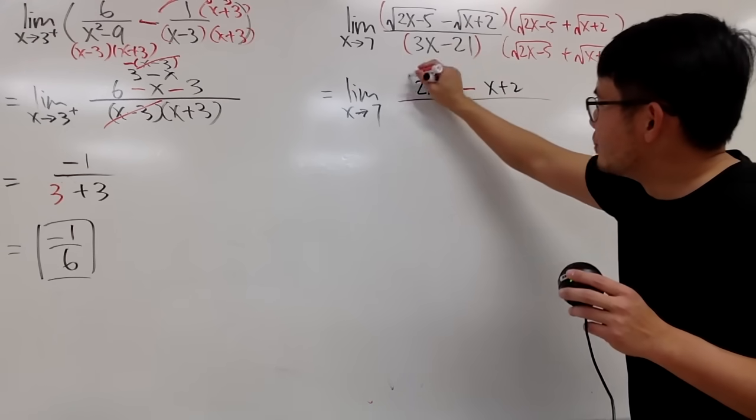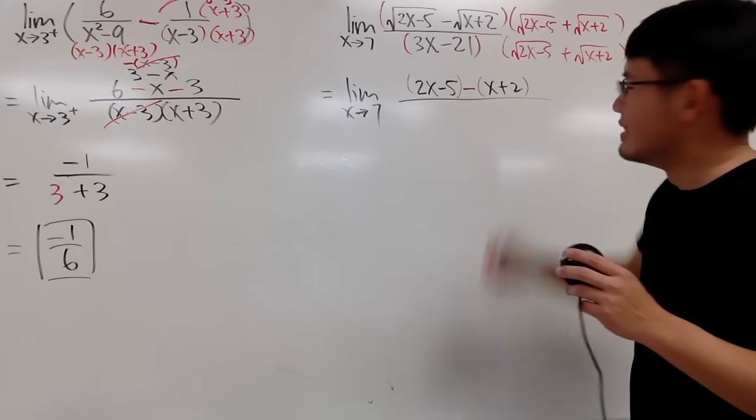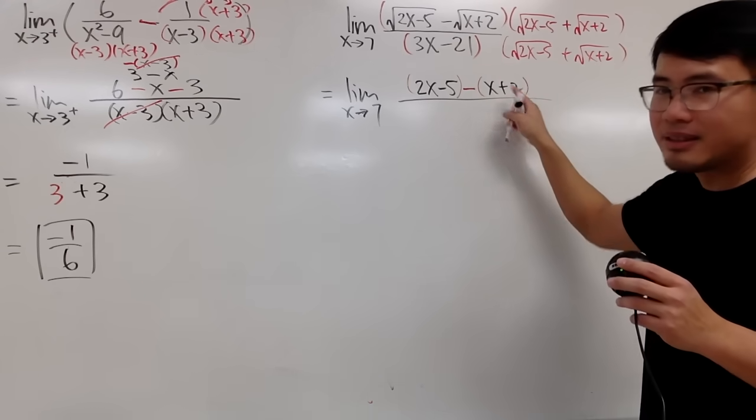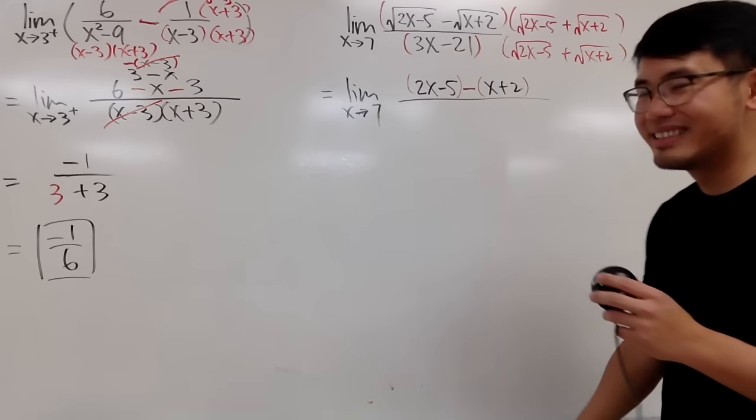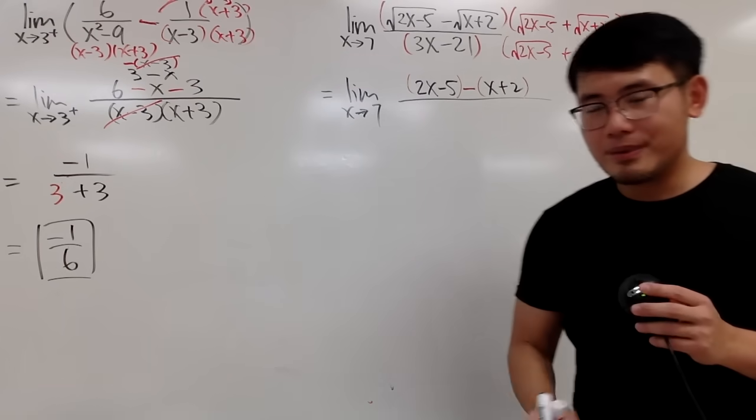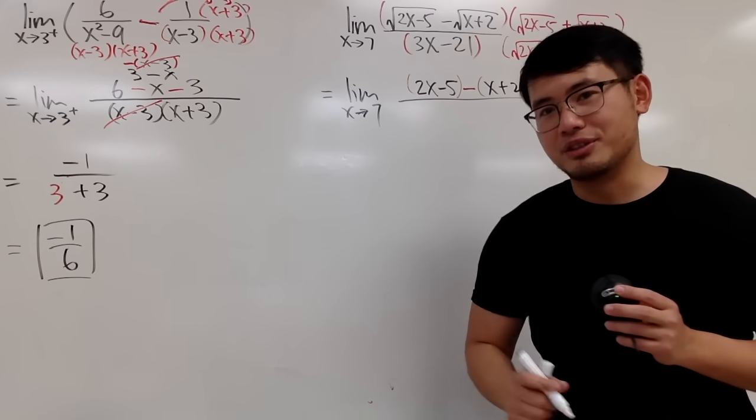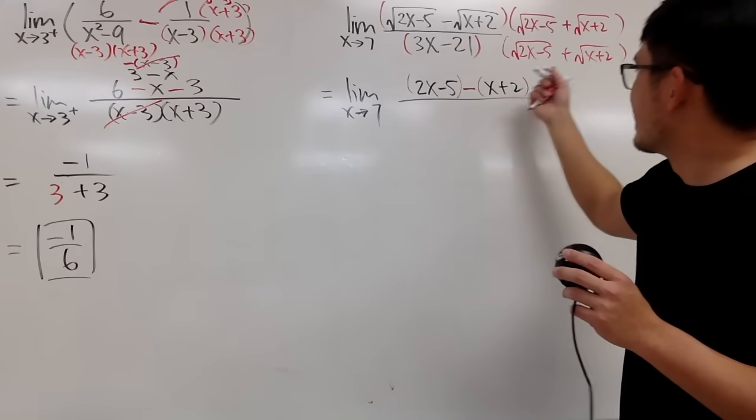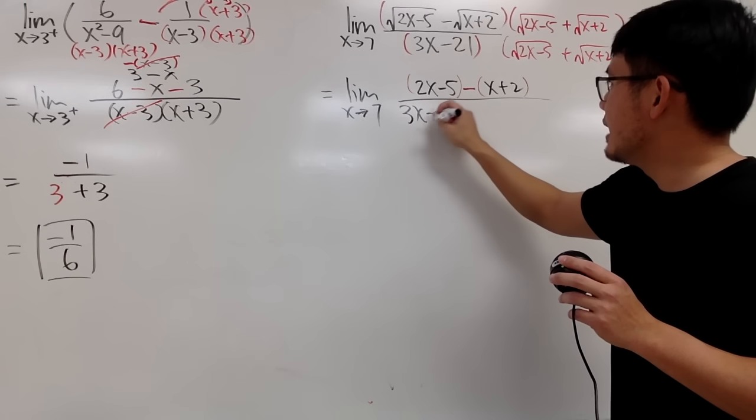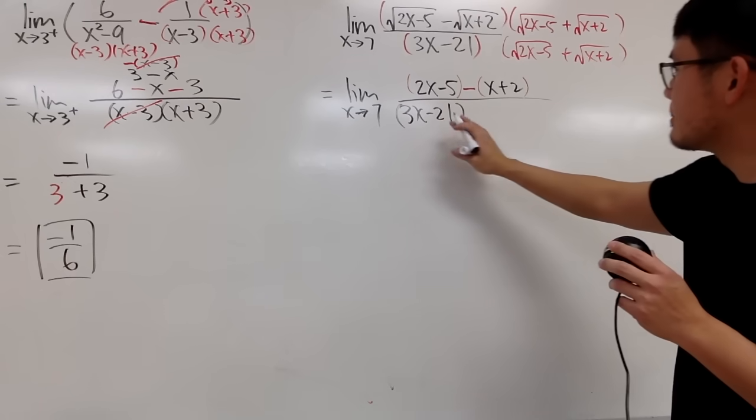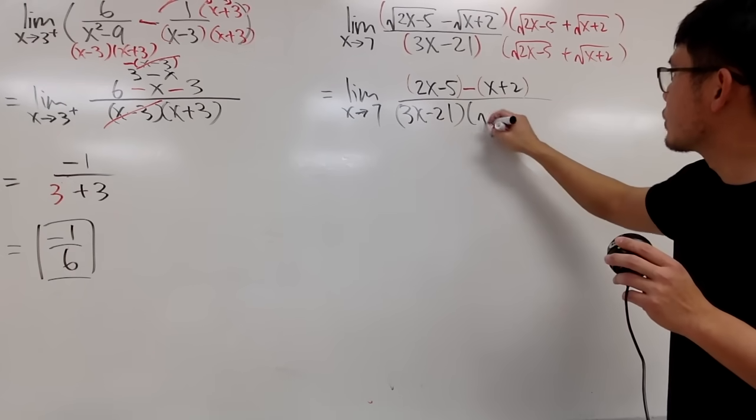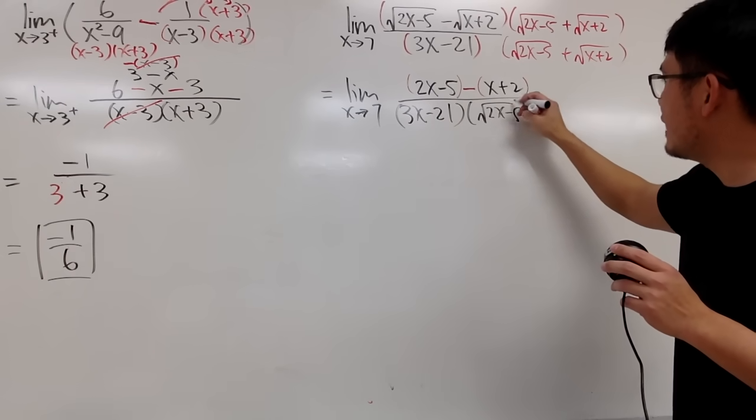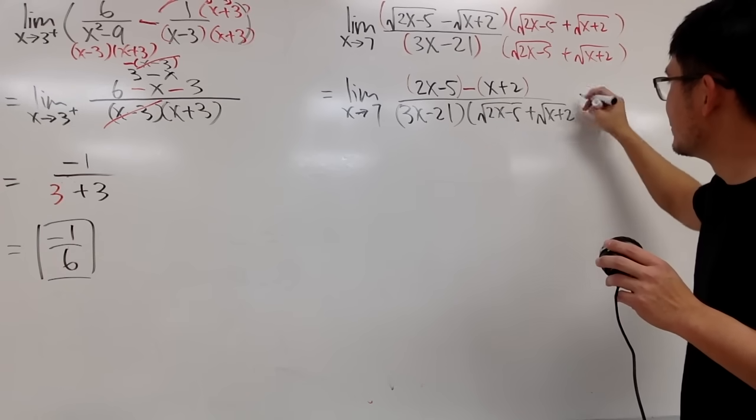And be sure you put parentheses around this and that. Because this right here matters. You have to distribute the minus. And for the bottom here, just keep it as how it is and wait for the good things to happen. So right here, there's nothing that I need to fix yet. I'll just keep it. 3x minus 21 and square root of 2x minus 5 plus square root of x plus 2.